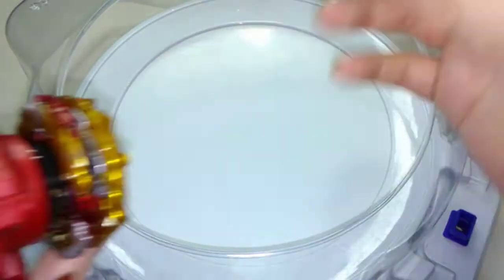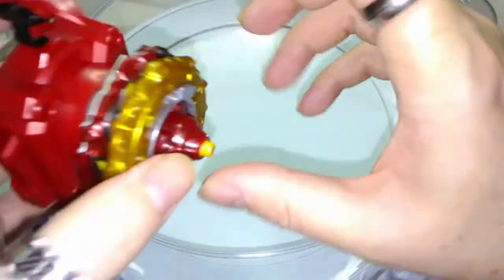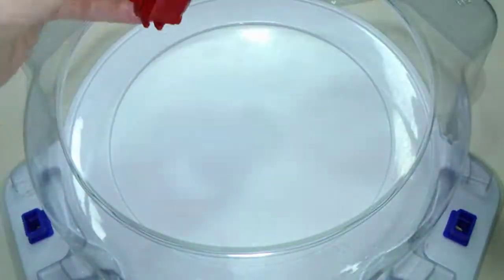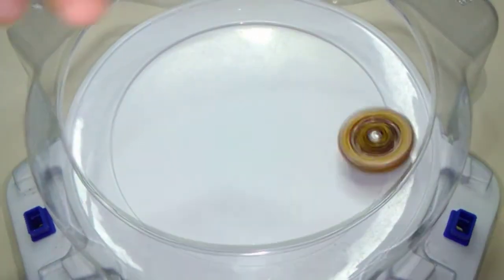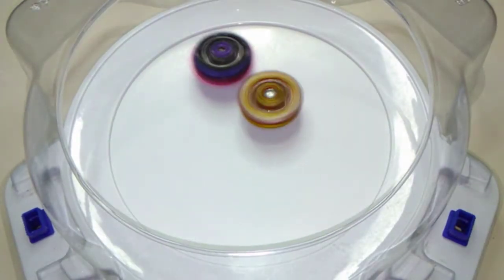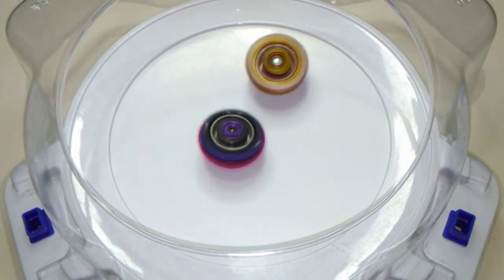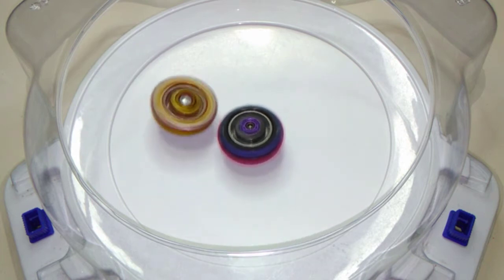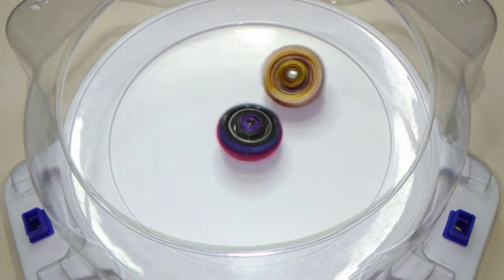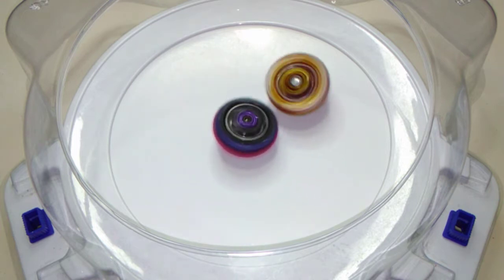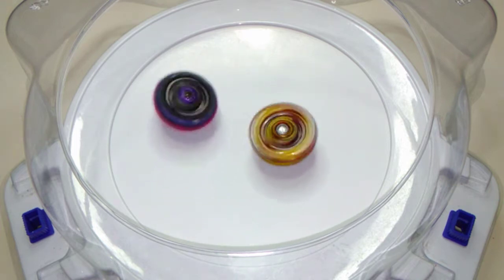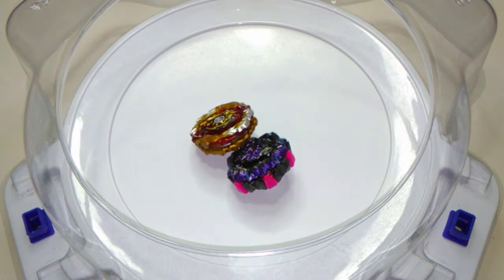And here we go, round number one. We're launching our World Spriggan first with that chassis frame in a fixed position and right rotation. Three, two, one, go shoot! And making contact with that barrier of Variant Lucifer's then. Circling, doing most of the striking at the moment is World Spriggan and slowing down for a spin finish, going to our Variant Lucifer.